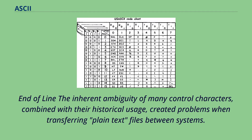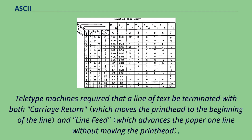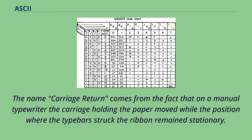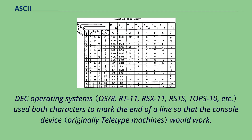End of line: the inherent ambiguity of many control characters, combined with their historical usage, created problems when transferring plain text files between systems. The best example of this is the newline problem on various operating systems. Teletype machines required that a line of text be terminated with both carriage return and line feed. The name carriage return comes from the fact that on a manual typewriter the carriage holding the paper moved while the position where the type bar struck the ribbon remained stationary. The entire carriage had to be pushed to the right in order to position the left margin of the paper for the next line.